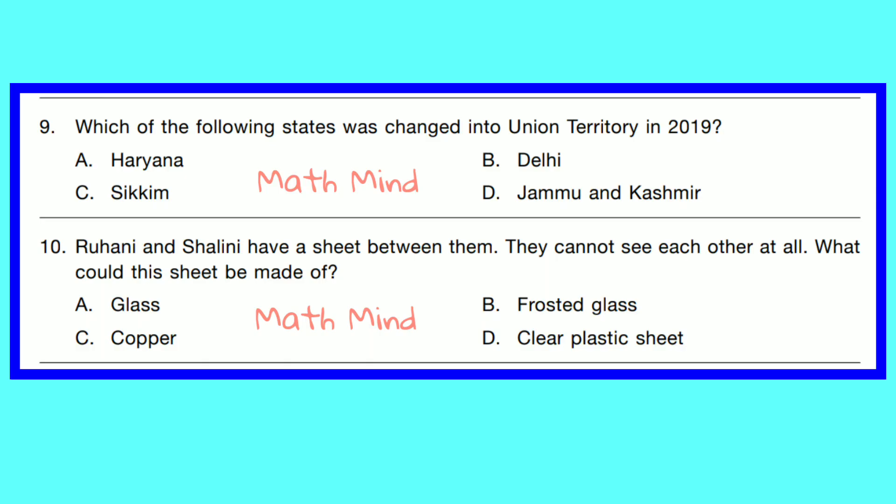Question No. 9. Which of the following states was changed into a Union Territory in 2019? Option D is correct — Jammu and Kashmir.